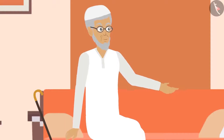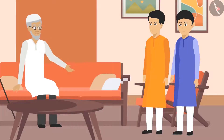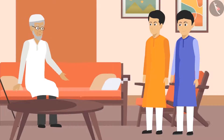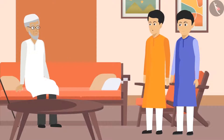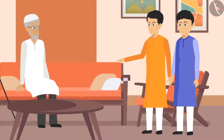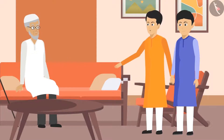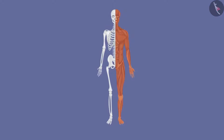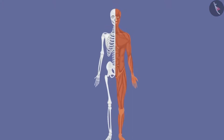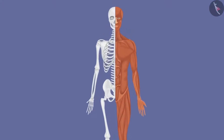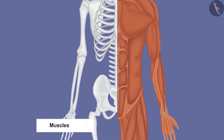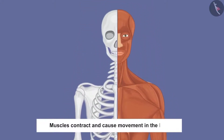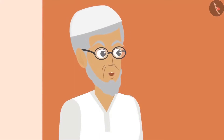'Right! Now tell me, how do our body parts move?' 'Chacha ji, our body parts use muscles for movement. Most of our muscles are attached to our bones. These muscles contract and cause movement in the bones.' 'Explain it further in detail.'